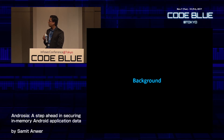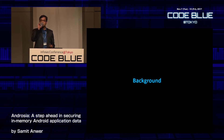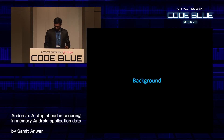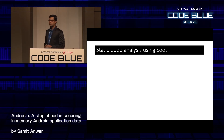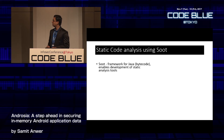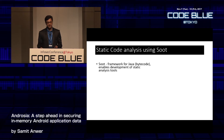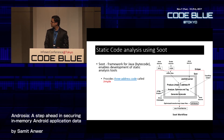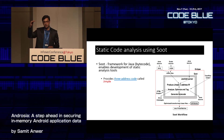The main framework used is Soot — a framework for Java bytecode analysis that helps develop static code analysis for Java and Dalvik bytecode. Soot provides a three-address code representation called Jimple. Java high-level code can have complex nested structures, while bytecode has 200-odd different opcodes, making analysis difficult — especially Dalvik's register-based format with no type information.